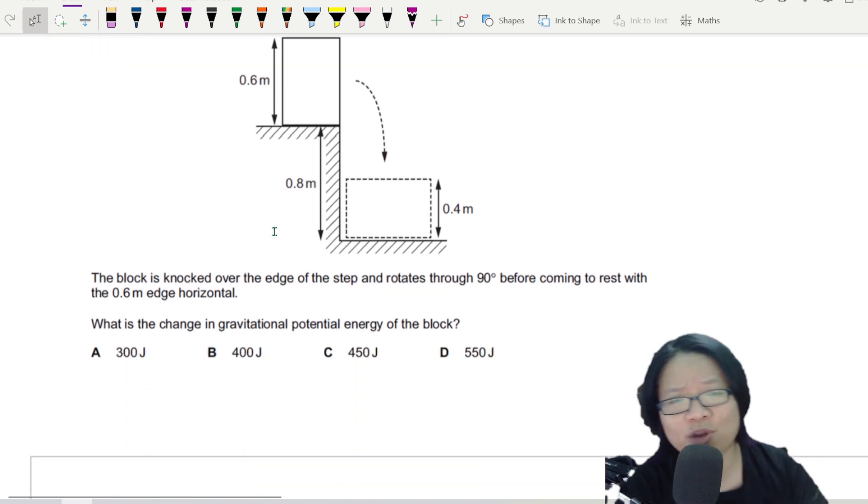The block is knocked over the edge and rotates 90 degrees before coming to rest with the 0.6 meter edge horizontal. Thankfully they draw it for you. So this is the 0.6 meter edge that was vertical and after it topples down, maybe someone kicked it, the 0.6 meter is horizontal. What is the change in GPE of the block?